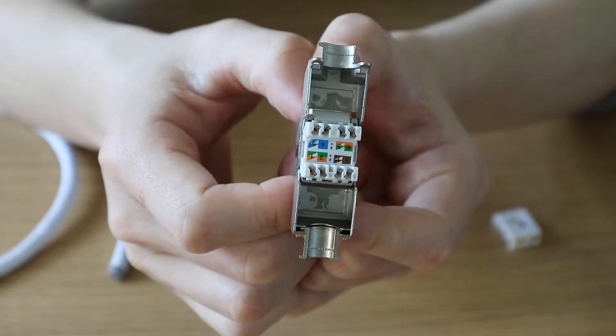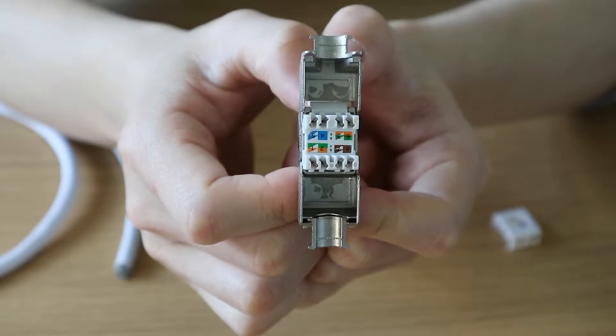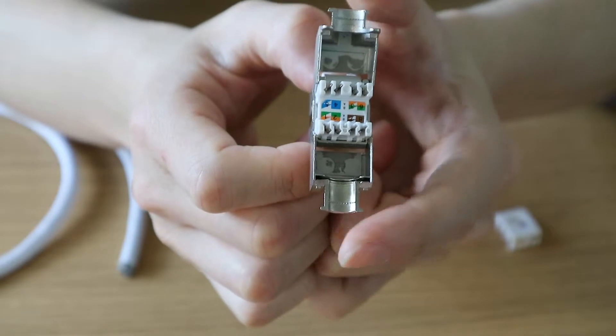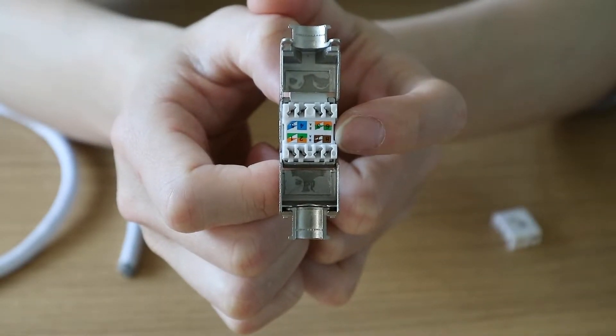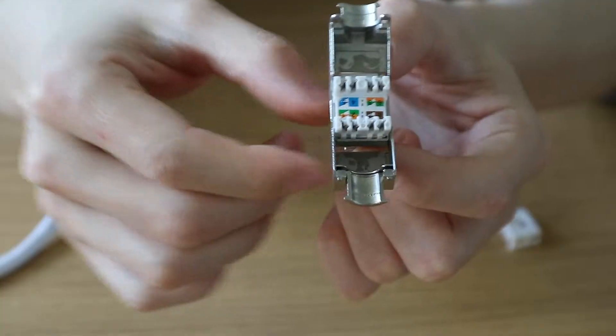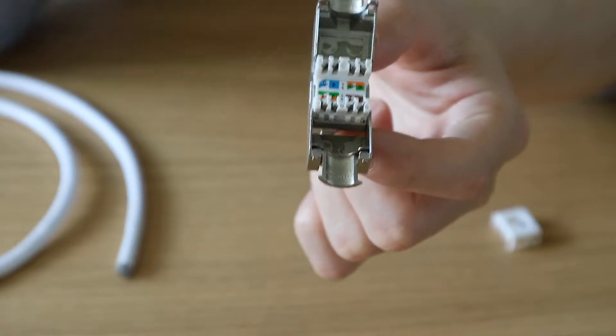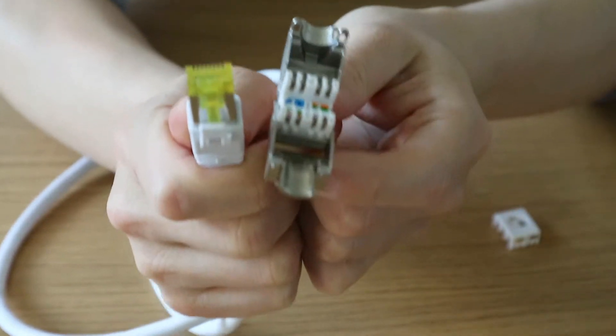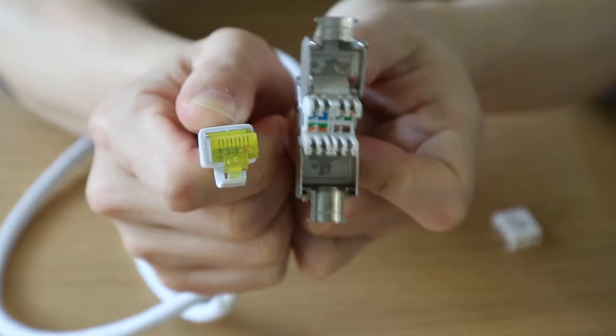Now, before we start, let me just quickly explain something. You probably can see there are different colors of the labels and also different numbers, and also there are A and B letters in there. There are two different cabling standards: T568A and T568B. Most of the cabling connection will be the B, which is T568B. Only occasionally, certain organizations use the T568A.